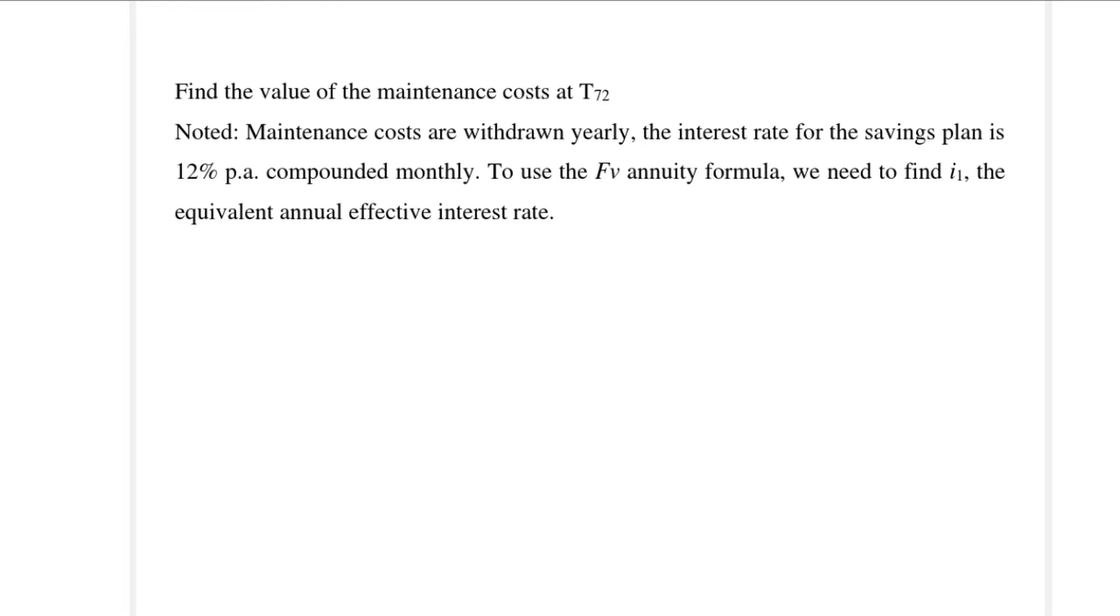We need to find i₁, the equivalent annual effective interest rate, so we're going to make use of our formula: iₚ = (1 + iₘ)^(m/p) - 1. In this case, our p is the one that we need to calculate, so our p is 1 and our m is the given one, it is 12 because it's compounded monthly. So it's 1 plus 0.01, m is 12 and our p, because it's annual, our p is equal to 1 minus 1, and we get 0.126825.